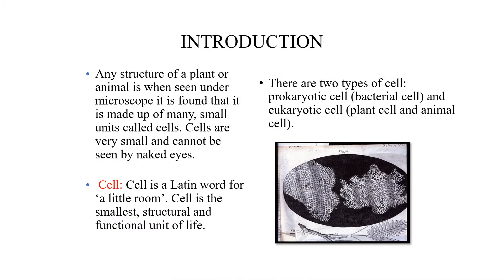Introduction. Any structure, whether plant or animal, if we see under the microscope, we can find it is made up of many small units called cells. Cells are very small and cannot be seen with our naked eye. Cell is a Latin word for 'a little room.' For the construction of a house, we need many walls.